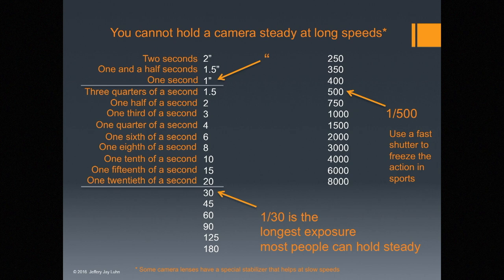A few other things about shutter speeds: a 30th of a second is the longest shutter speed that most people can hold steadily. A longer exposure than a 30th risks some camera movement. I like to stop motion entirely and use a fast shutter speed like a 500th of a second.